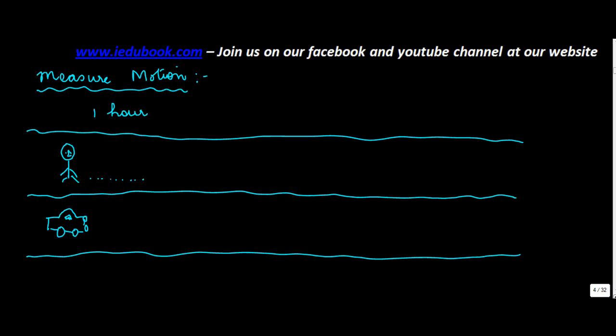Now as the man starts moving within one hour, let's say these are the milestones in kilometers. In one hour the man moved up to one kilometer. In the same one hour the car moved let's say four kilometers.